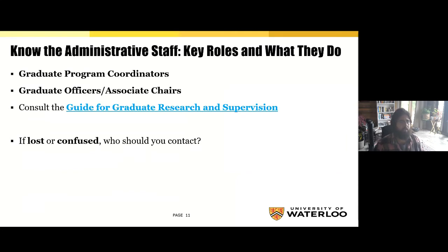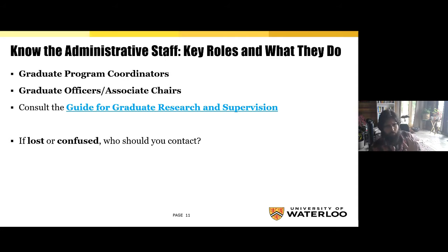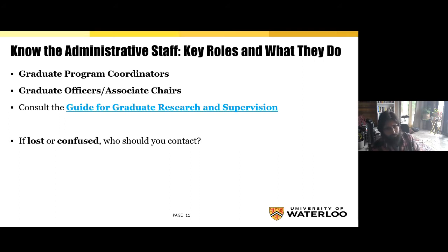Let's start by getting to know the administrative staff and their key roles. The most important person in this category is the Graduate Program Coordinator — your go-to individual for questions regarding your program. Coordinators are the lead staff person working with the graduate officer to support graduate students, and they can answer administrative questions about admissions, forms, and procedures. We also have Graduate Officers or Associate Chairs — faculty members who advise prospective and current students about academic and research matters and serve as the administrative lead for all issues related to your graduate studies.